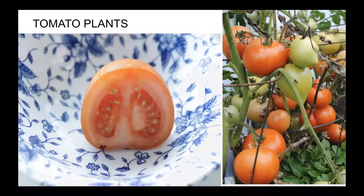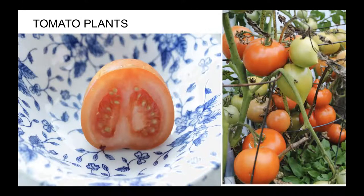Here's a tomato plant — one of the favorite fruits we eat here in the United States. On the right is a picture of the tomato plant with both green and ripe tomatoes. On the left is a picture of the tomato sliced in half, and you can see little seeds all in here. Each one of those seeds can make a whole plant by itself when it's planted.